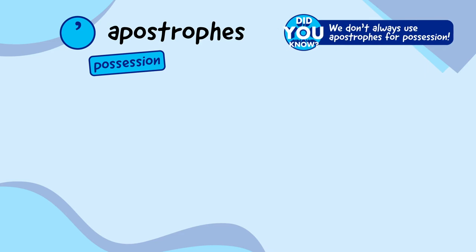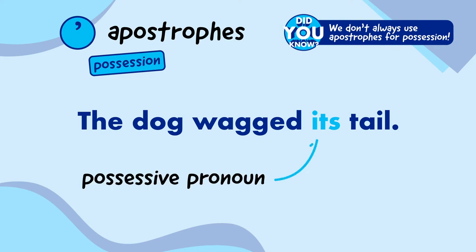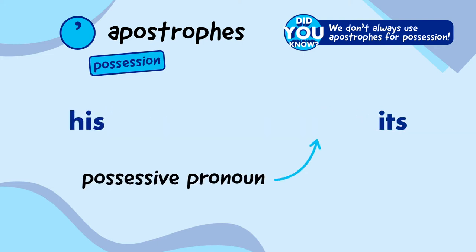Did you know that we don't always use an apostrophe to show possession? In this sentence, the word 'its' is showing that the tail belongs to the dog, but we don't use an apostrophe because 'its' is a possessive pronoun, like his, hers, and theirs.